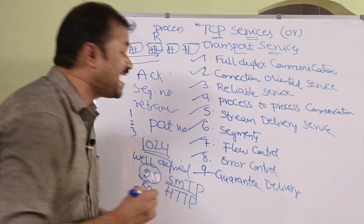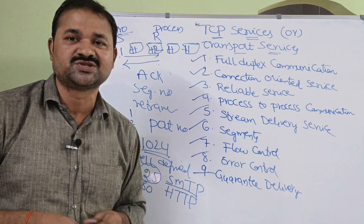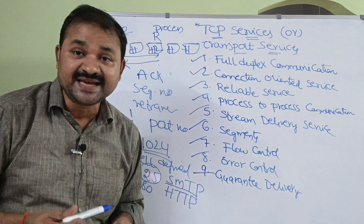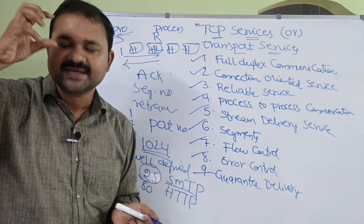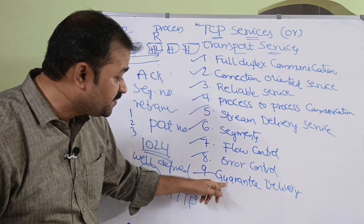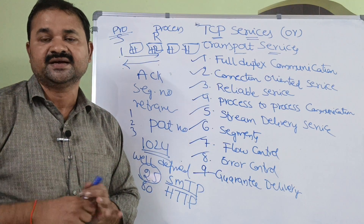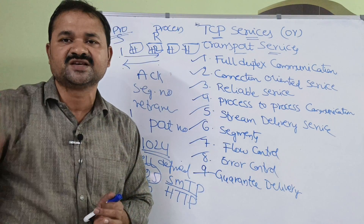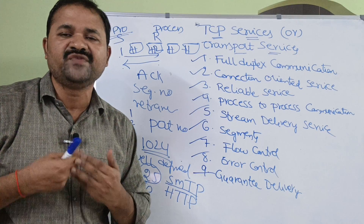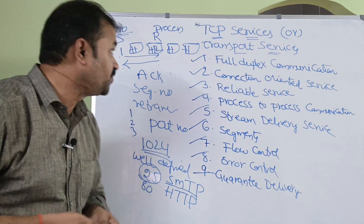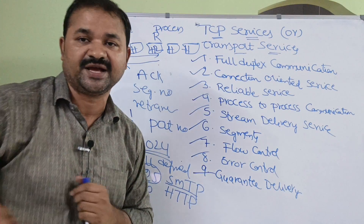The final service is guarantee delivery, which is similar to reliable service. TCP ensures 100% guarantee delivery — if the sender sends a segment, TCP guarantees that it will arrive correctly at the receiver. This covers the various services and responsibilities of TCP and the transport layer.